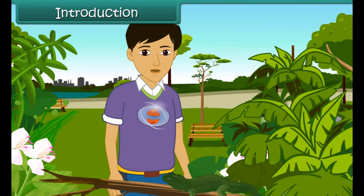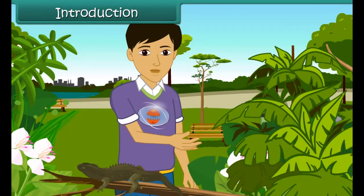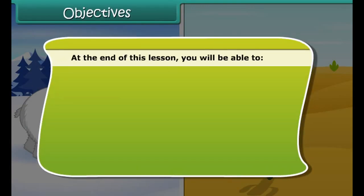A chameleon changes its color according to its surroundings to escape its predators. It is quite essential that they adapt to their surroundings to survive. These adaptations allow animals and plants to survive and grow in a particular habitat. In this lesson, we are going to learn how different plants and animals adapt according to their habitats.